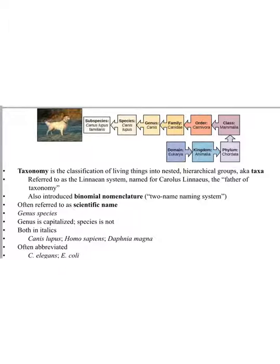So now that we have a grasp on how to use phylogenetic trees, let's go ahead and talk a little bit about taxonomy. So taxonomy is a system that we use to classify organisms into taxa or taxonomic groups.